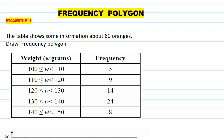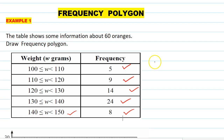We need to draw a frequency polygon. If you see here, the weight between 100 to 110 — there are 5 oranges whose weights are between 100 and 110. Similarly, between 110 to 120 there are 9, then 120 to 130 there are 14, 130 to 140 there are 24, and 140 to 150 there are 8. So the first thing you need to do is calculate the midpoint.